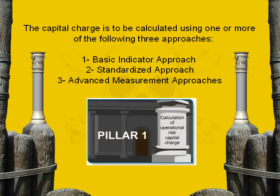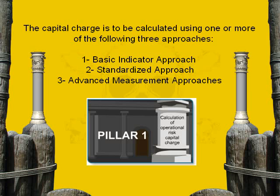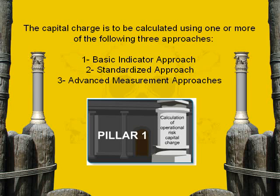These three approaches are: one, the Basic Indicator Approach; two, the Standardized Approach; and three, the Advanced Measurement Approach. In the Basic Indicator Approach and Standardized Approach, the capital charge for operational risk is calculated based on specific guidance and factors provided by Basel II. However, under the Advanced Measurement Approach, the calculation is based on the bank's internal loss estimates within a framework acceptable to the supervisor.